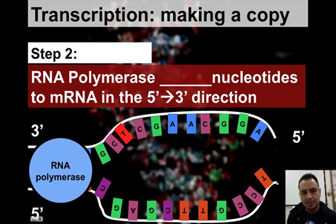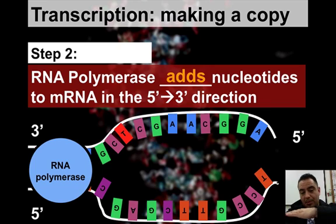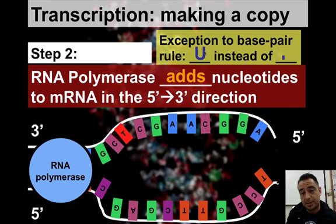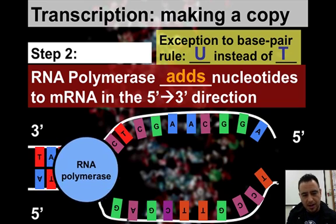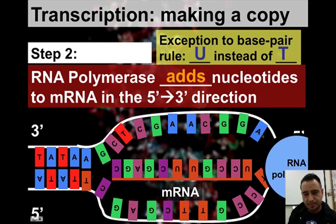Then RNA polymerase is going to add nucleotides in the 5' to 3' prime direction. That just tells you the order — DNA is anti-parallel, so one side goes in one direction and the other side goes in the opposite. When we make RNA, it goes in the 5' to 3' prime direction. Also remember that we have a U instead of T every time we build RNA. The strand it uses is called the template strand, and it builds in the 5' to 3' prime direction — left to right, not 3' to 5'.